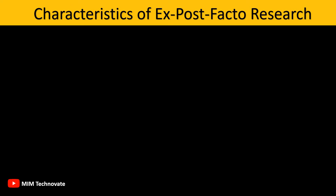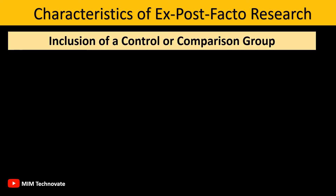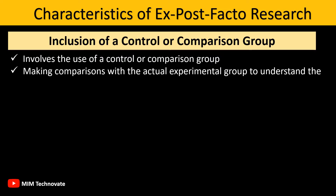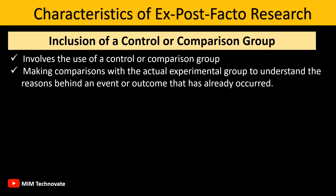Characteristics of Ex-Post-Facto Research. Inclusion of a Control or Comparison Group: Ex-Post-Facto Research involves the use of a control or comparison group. This group is important for making comparisons with the actual experimental group to understand the reasons behind an event or outcome that has already occurred.